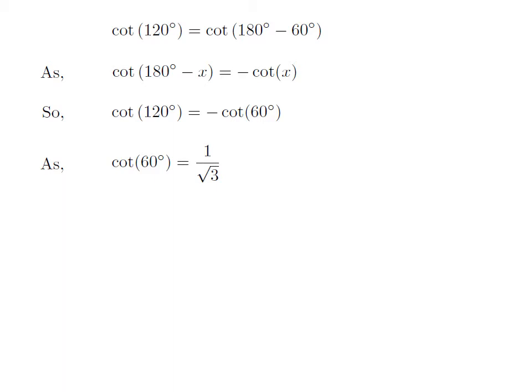We know the value of cotangent of 60 degrees is equal to 1 upon square root of 3.